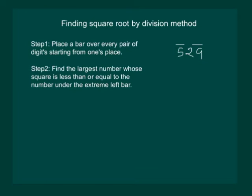Next step is to find the largest number whose square is less than or equal to the number under the extreme left bar. We have 5 under the extreme left bar. So we have to find the number whose square is less than or equal to 5. We know that 1 squared is 1, 2 squared is 4, and 3 squared is 9. So the required number is 2.